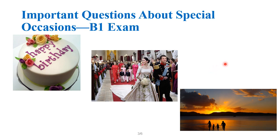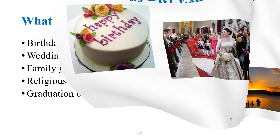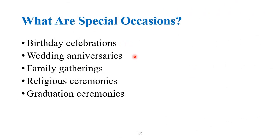First of all, try to understand what types of special occasions are in a person's life. It could be birthdays, wedding anniversaries or weddings, trips together, and all sorts of things which are special. Even some festivals are special occasions if you have a family gathering. Here is a list: birthday celebrations, wedding anniversaries, family gatherings, dinners, parties, religious ceremonies, and graduation ceremonies. This is not an exhaustive list, but these give you an idea of what types of occasions are called special occasions.